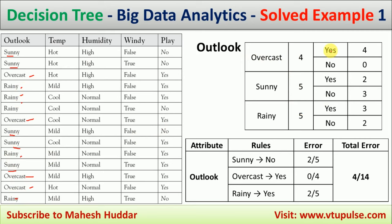Now we count the possible target values — yes and no — for each outlook value. For overcast, all four are yes and zero are no. For sunny, there are two yes and three no. For rainy, there are three yes and two no.